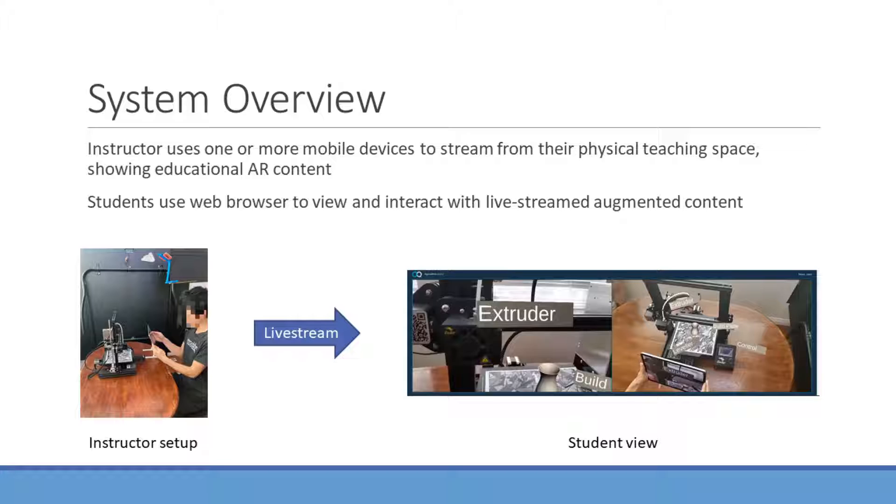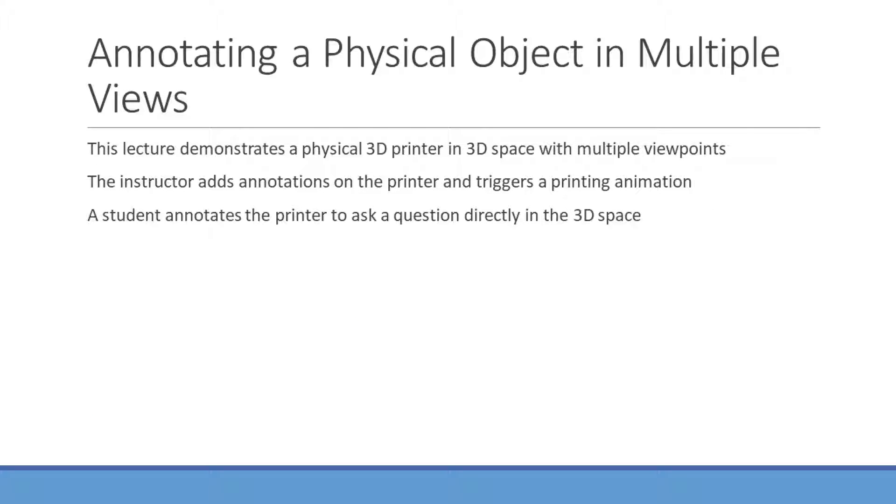Now that we have a brief understanding of the system, we show a couple of demonstrative examples showing some of its capabilities. The first example is annotating a physical object in multiple views. This sample lecture demonstrates a physical 3D printer in the 3D teaching space and uses two devices to show two different viewpoints. During the lecture, the instructor adds annotations on the printer and triggers a printing animation. A student also asks questions directly in the 3D space by annotating the printer.